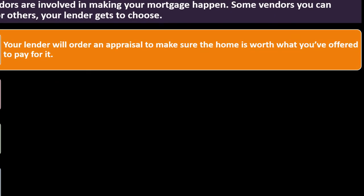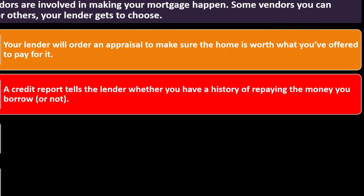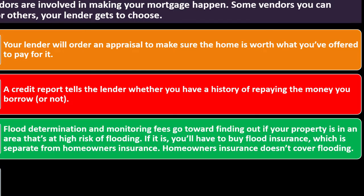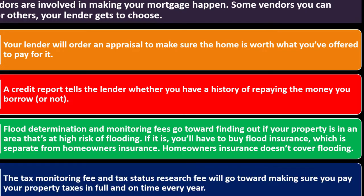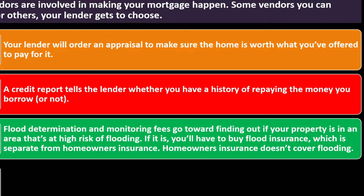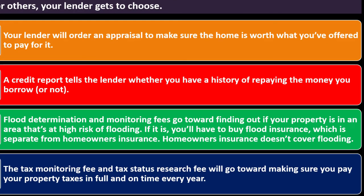Your lender will order an appraisal to make sure the home is worth what you've offered to pay for it. The credit report tells the lender whether you have a history of repaying money you borrow. The flood determination and monitoring fees go toward finding out if your property is in a high-risk flood area — if it is, you'll have to buy flood insurance, which is separate from homeowners insurance. Homeowners insurance does not cover flooding.